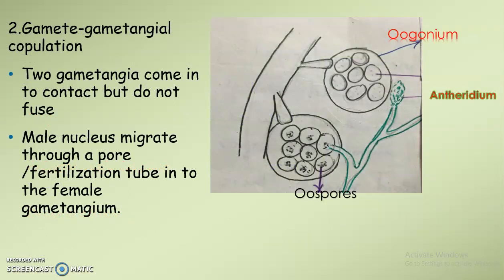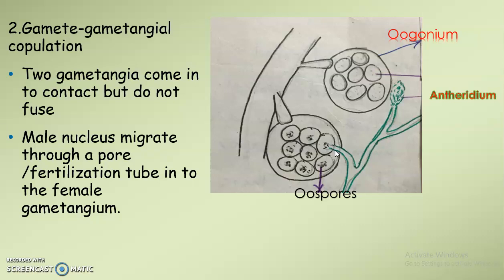The second method is gametangial copulation. Here two gametangia come closer — this is the oogonium, which is the female gametangium, and the antheridium, which is the male gametangium. They come closer, and after that the male nucleus migrates into the female gametangium through a fertilization tube or a pore.